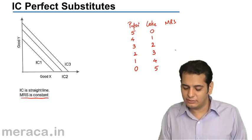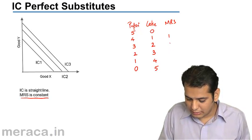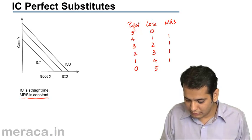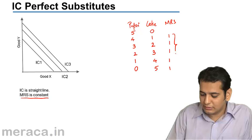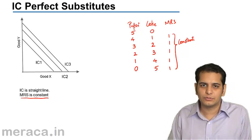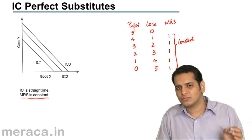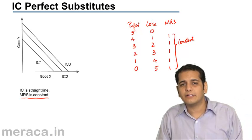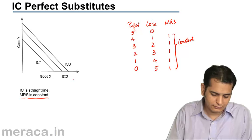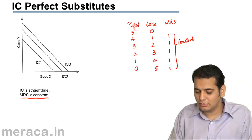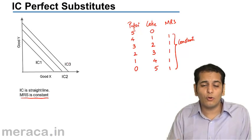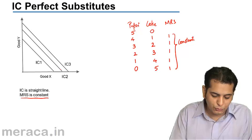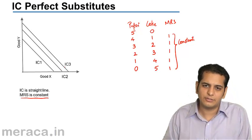What is the MRS in this case? The MRS here is 1 — at every level it is 1. So MRS is constant in the case of perfect substitutes. We have already learned that when the MRS is constant, the curve we get is linear — it is in the form of a straight line. So IC1 that we see here is linear. Likewise, IC2 and IC3 will also be linear, and IC2 and IC3 will give a higher level of satisfaction than IC1.